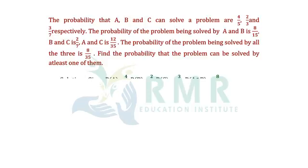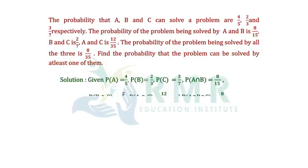Given data: P(A) = 4/5, P(B) = 2/3, P(C) = 3/7, P(A∩B) = 8/15, P(B∩C) = 2/7, P(A∩C) = 12/35, and P(A∩B∩C) = 8/35.